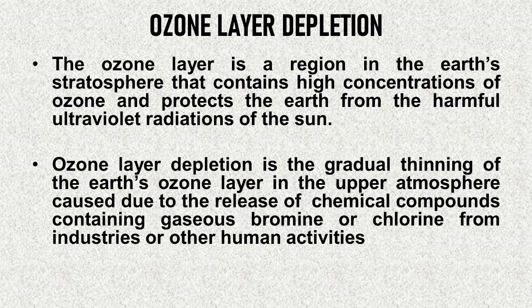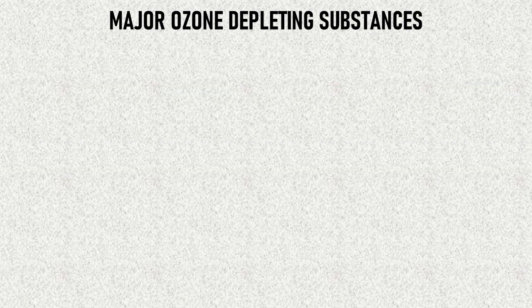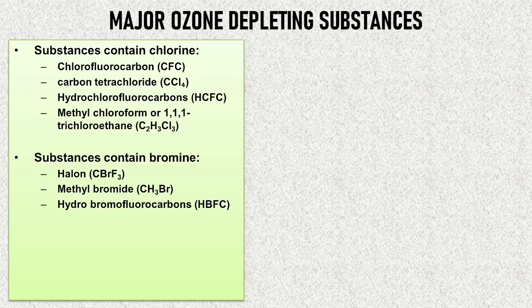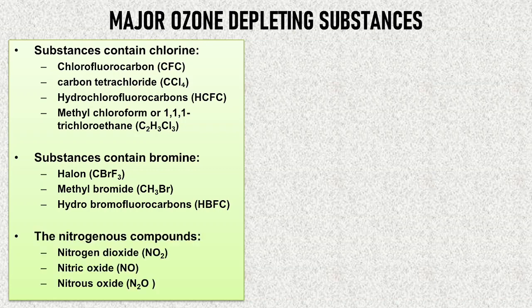There are natural chemical compounds involved — like bromine and chlorine — and these are mainly from human activity. The ozone depleting substances include chlorofluorocarbons, carbon tetrachloride, hydrochlorofluorocarbons, methyl chloroform, and 1,1,1-trichloroethane. The bromine-based substances include halon, methyl bromide, and hydrobromofluorocarbons. The nitrogenous compounds include nitrogen dioxide, nitric oxide, and nitrous oxide, and these are major depleting substances.